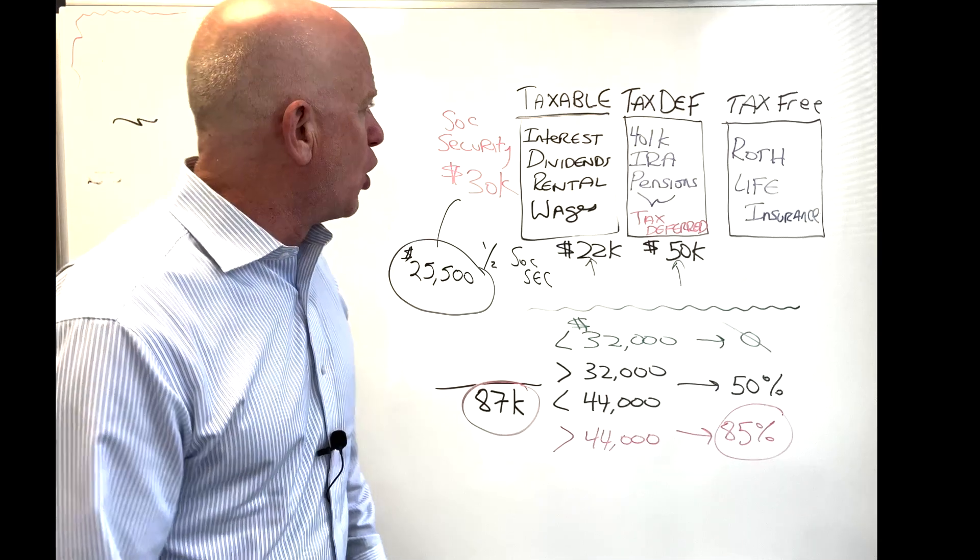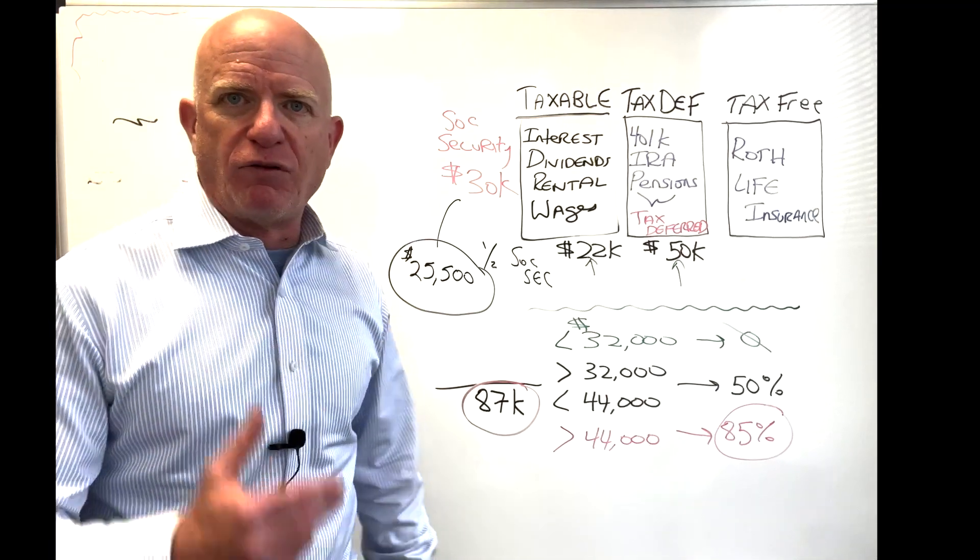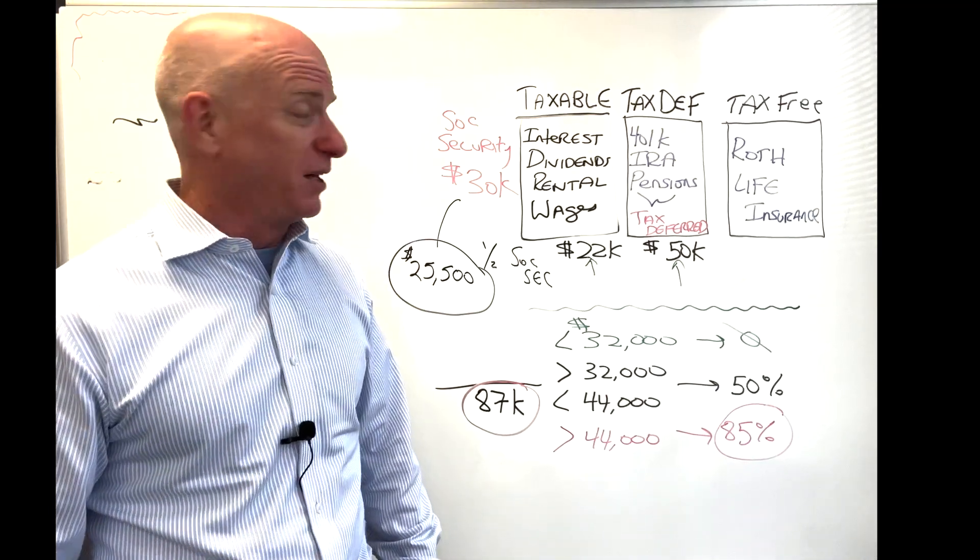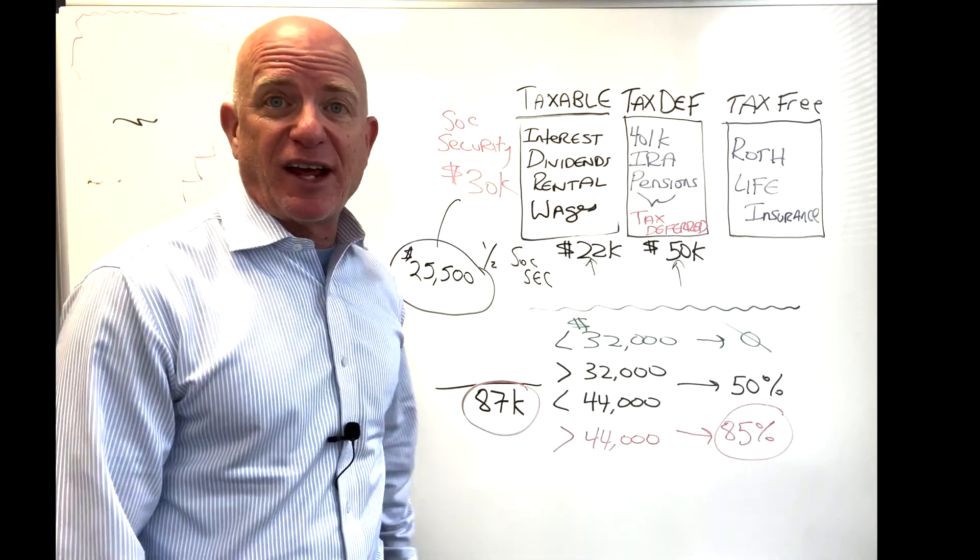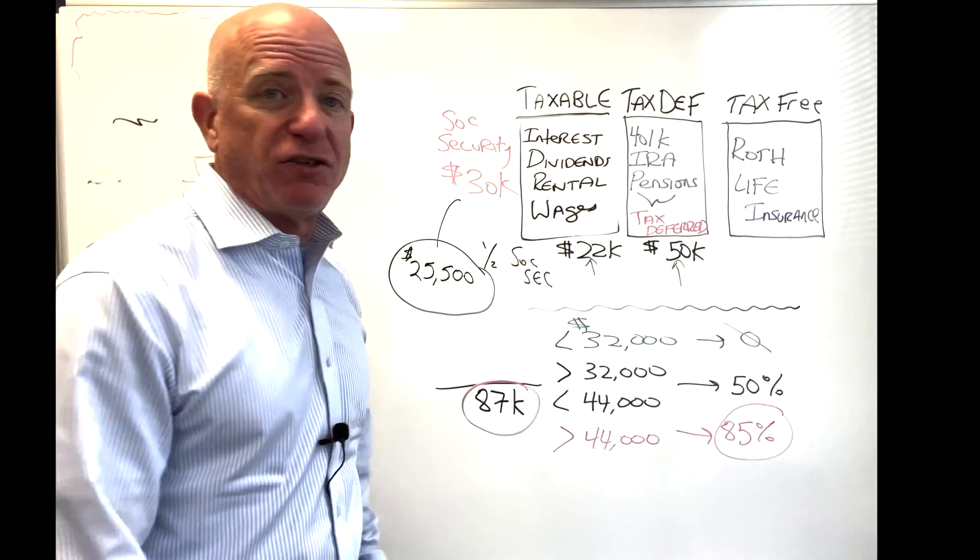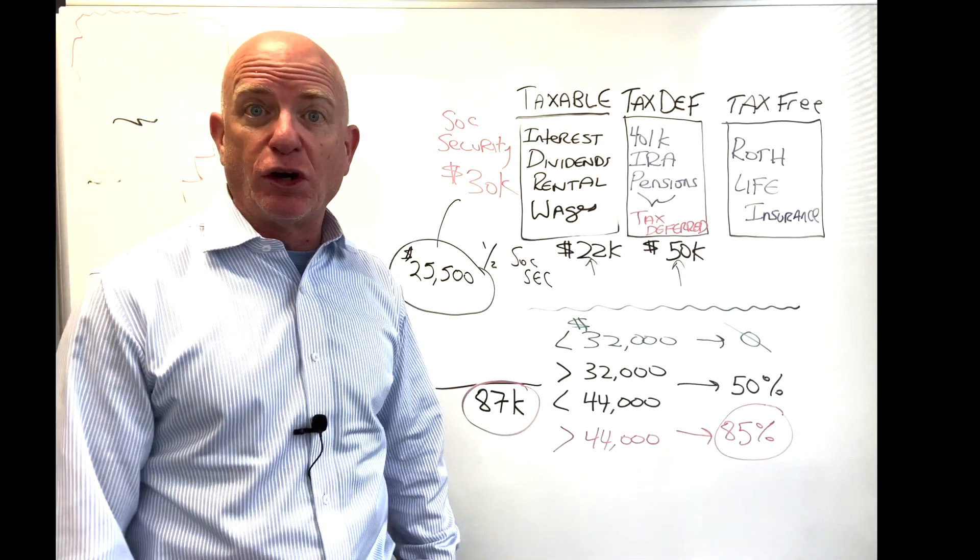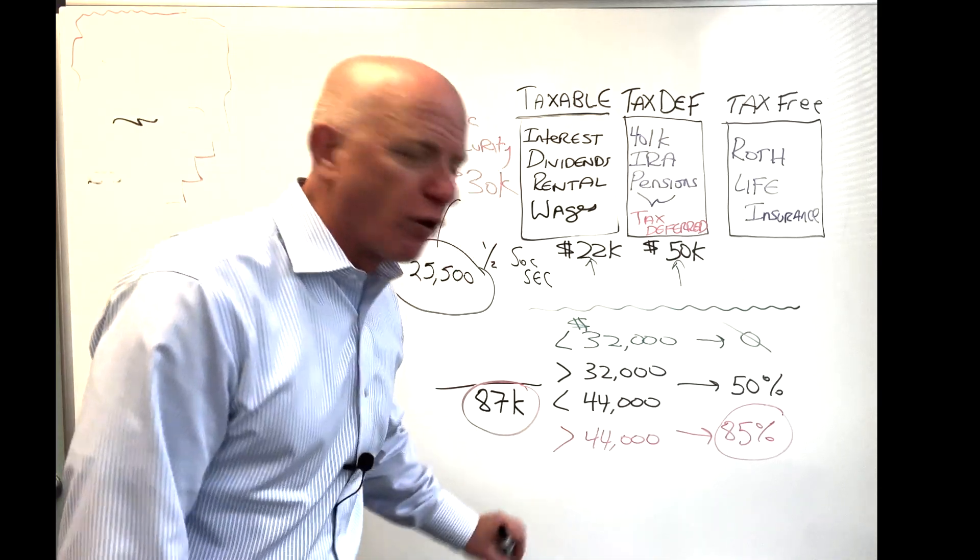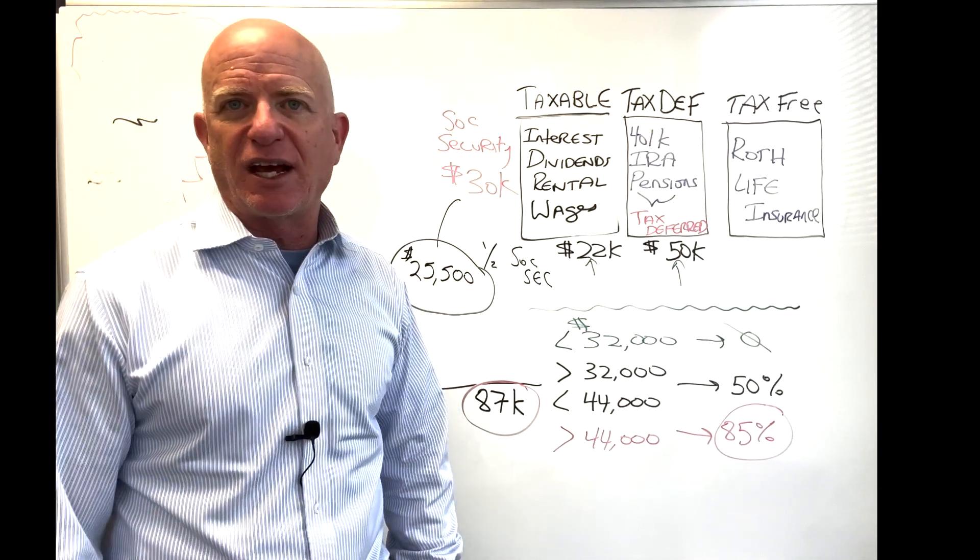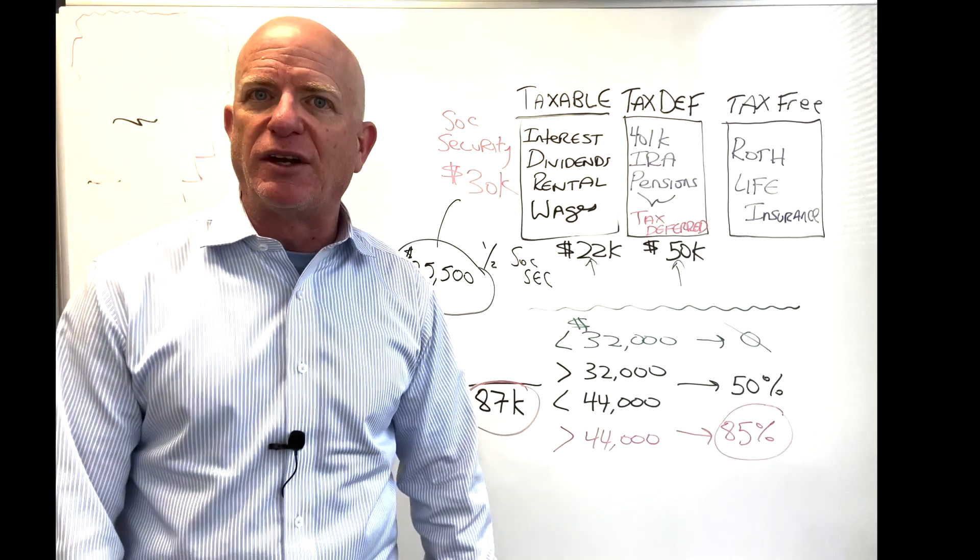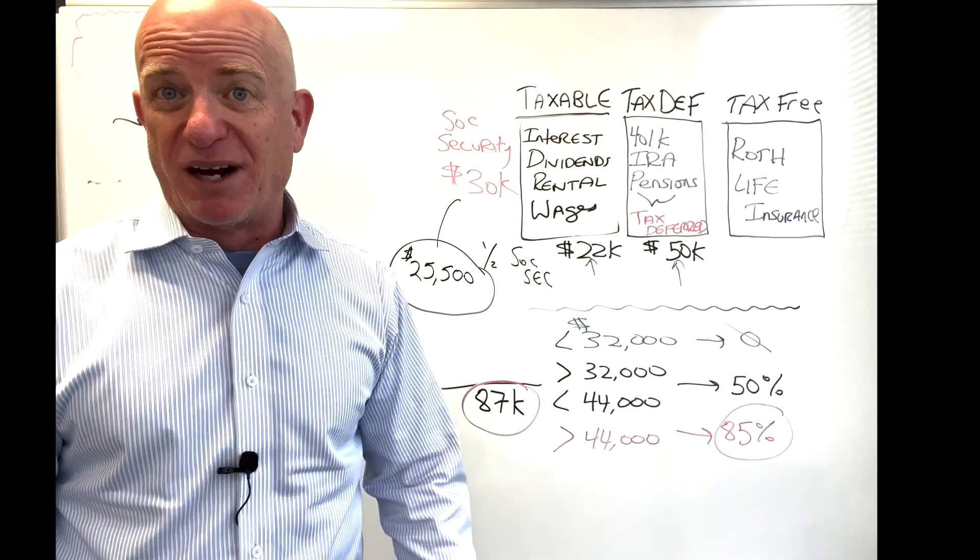I hope that is helpful for you. In review, one more time quickly: anything that comes out of taxable, anything that comes out of tax-deferred, plus one half of your Social Security. If it's greater than $44,000, that number, you're going to pay tax on 85% of your Social Security benefit.